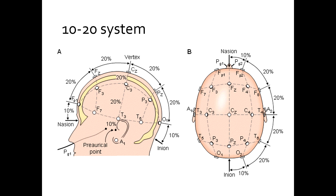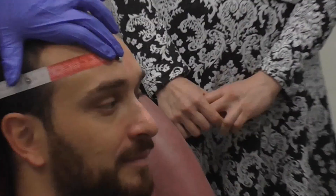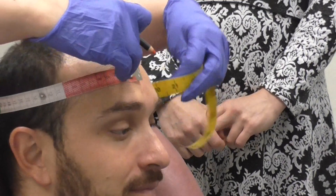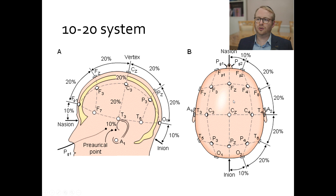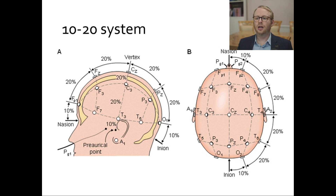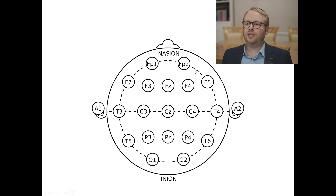Where we put the leads is actually quite specific. We use something called the 10-20 system, so-called because it uses measurements and percentages to make our different points of 10 and 20 percent. We go longitudinally and horizontally, and we can put our leads in very specific places which correlate to known areas of particular parts of the brain. This gives us a head map — a two-dimensional head map — and you can see all these different leads from the 10-20 system. There's more that can be recorded than just the 10-20 system, but this is the standard way of recording your standard EEG.